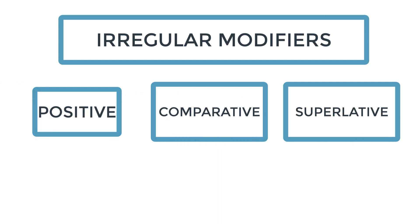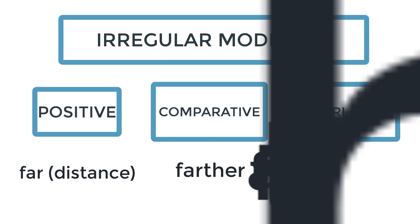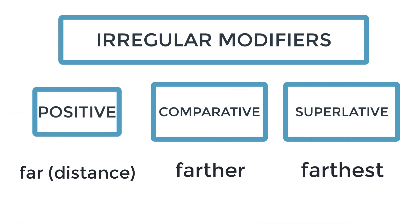Let's go on to the modifier far. The modifier far has two meanings. The first meaning of far is literal distance. For literal distance, you have far, farther, and farthest. But when you say far, meaning to the extent or degree of something, you will use further as a comparative and furthest as a superlative. Far, further, furthest. It doesn't mean the same as far, farther, farthest, which has to do with distance.